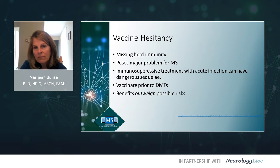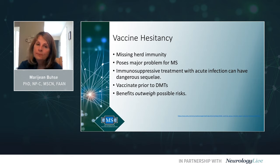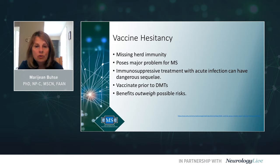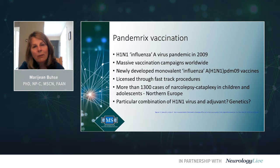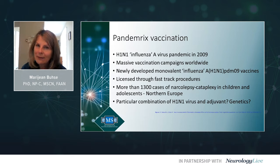Missing herd immunity due to vaccine hesitancy poses a major problem for MS. Immunosuppressive treatments combined with acute infection can have dangerous sequelae. We vaccinate prior to DMTs because the benefits outweigh all the possible risks. In the current pandemic, there is a rush to create vaccines, with roughly 90 companies pursuing vaccine projects.